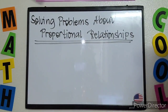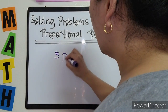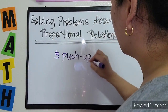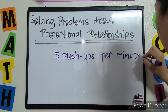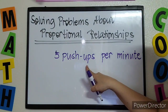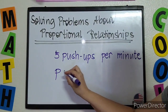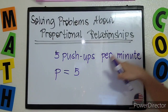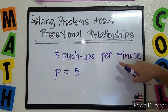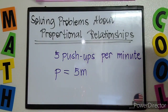Next: what if in a given word problem it says five push-ups per minute? We are talking of push-ups, so in your equation it's P for push-ups equals 5. It says per minute, so minute will come with your k. So the equation is P equals 5M, where M stands for minute.